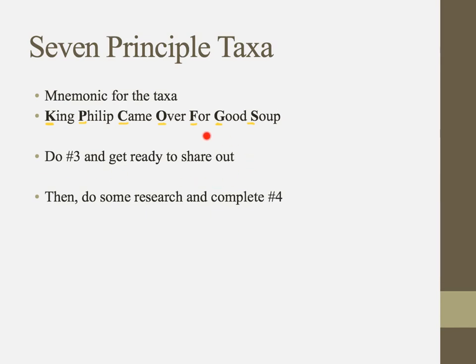One of the requirements for IB, which is absolutely insane, is that you can completely classify organisms at all taxonomic levels for two examples of your choice. So make sure you're taking time to fill out the full classification — kingdom, phylum, class, order, family, genus, species — for those two different organisms.